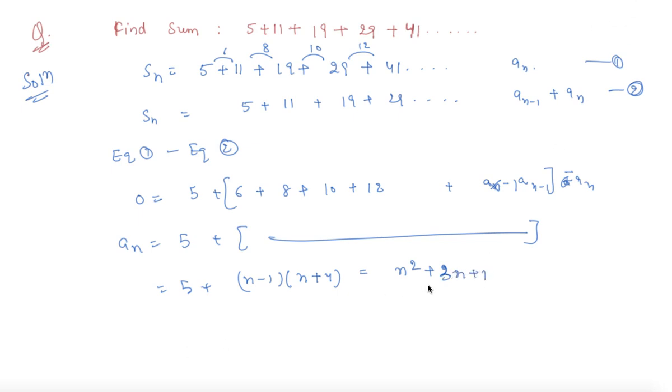So by this way I will get the general term of this a_p. After we get the general term of a_p, we can apply the formula for S_n. This will be summation k square k equals 1 to n plus 3 summation k equals 1 to n plus n.